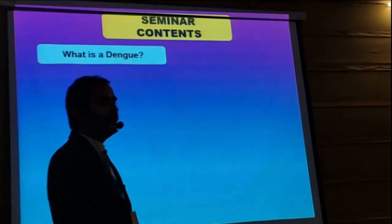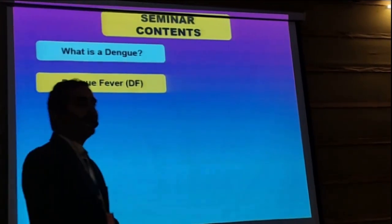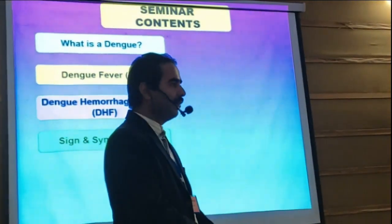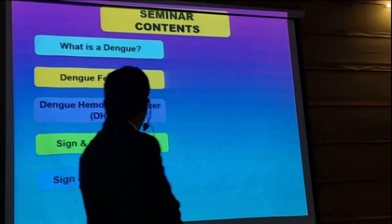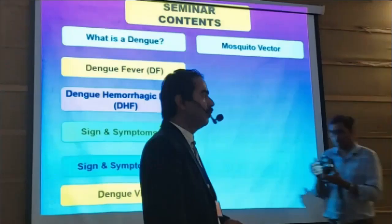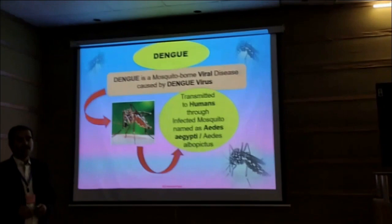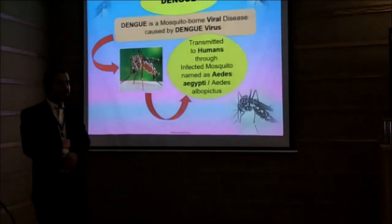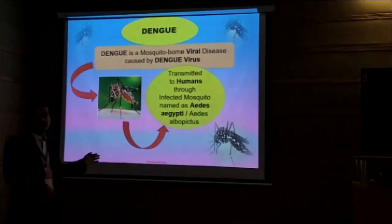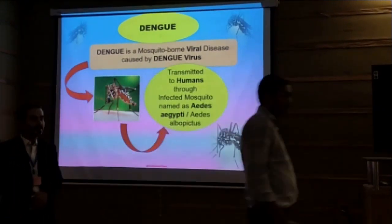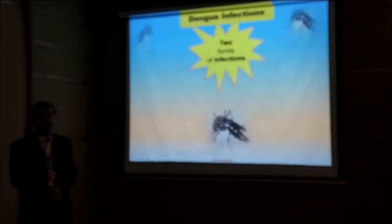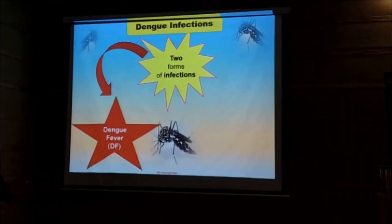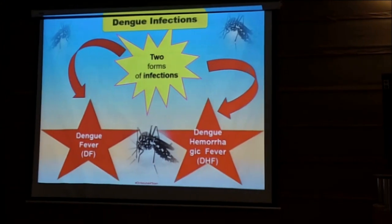The contents include what is Dengue and Dengue fever, Dengue hemorrhagic fever, and what are the signs and symptoms of Dengue fever, signs and symptoms of Dengue hemorrhagic fever and Dengue virus. The most common mosquito is the Aedes aegypti. However, some other species of Aedes that can also cause this disease. Dengue virus mostly causes two forms of infections: number one, Dengue fever, and the other form is Dengue hemorrhagic fever.